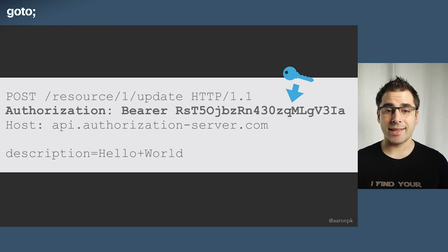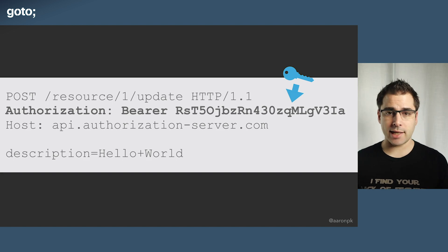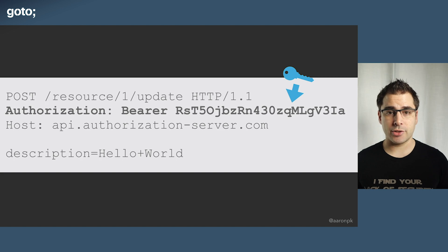After the OAuth flow is complete and the user has allowed the application access to their account, that application will have an access token, which is a string of characters that doesn't mean anything to the application. That string of characters is then used in an API request to access that API. What's interesting is that nothing in this process actually tells the application about the user. OAuth was not created as a single sign-on protocol or as a way to talk about user identity. It was created to access APIs.